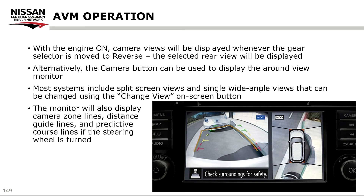The monitor will also display camera zone lines, distance guidelines, and predictive course lines if the steering wheel is turned. It's important to understand that the AVM is only going to turn on by itself if you put it in reverse. If you're pulling into a parking spot and want to use the side cameras or front camera, you physically have to hit the camera button on the dashboard. When working with consumers, make sure they understand how the system actually operates — the owner's manual and tech info are great resources.